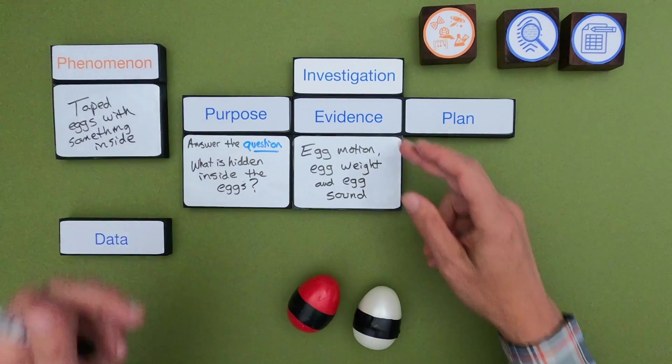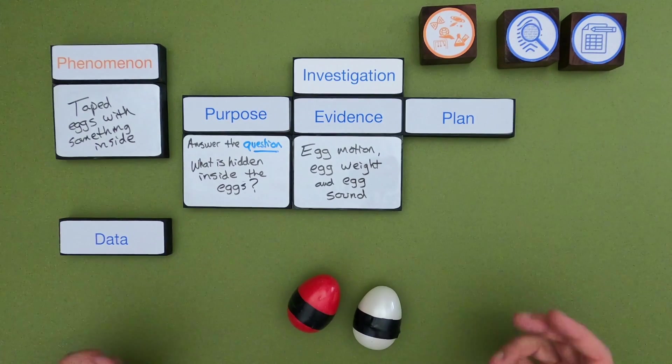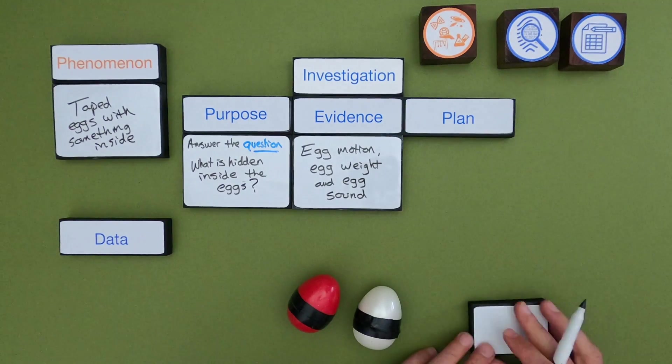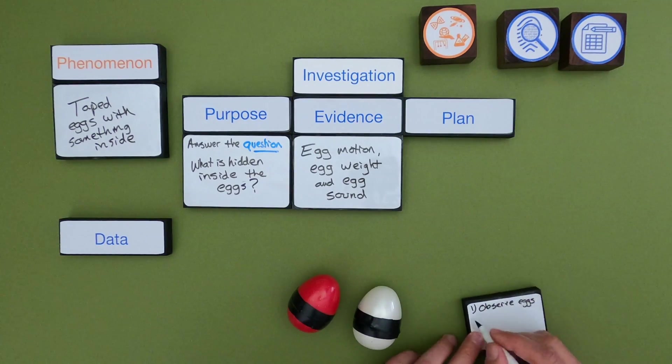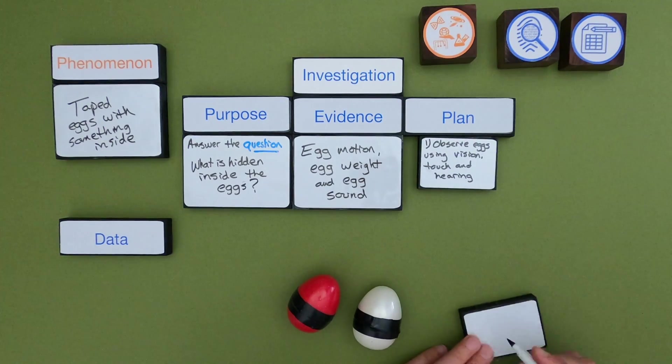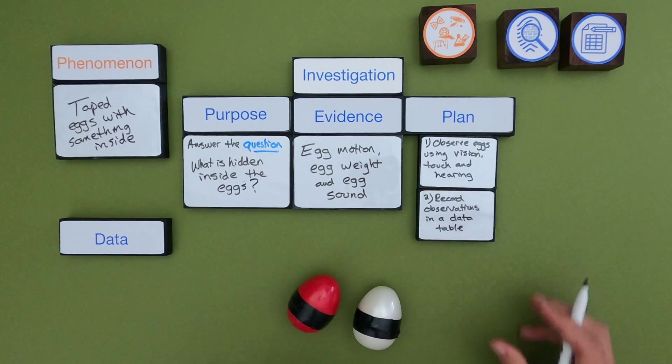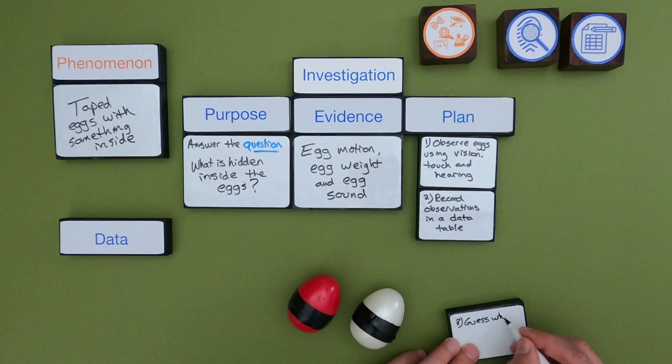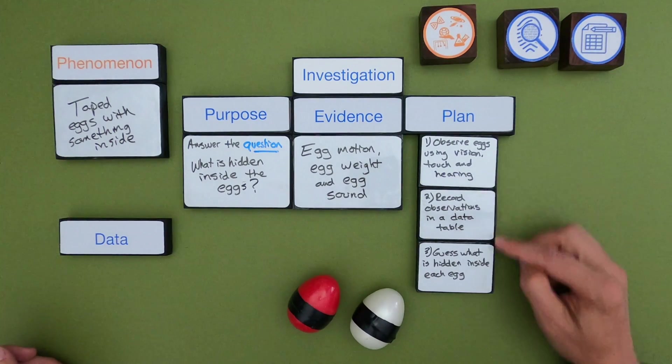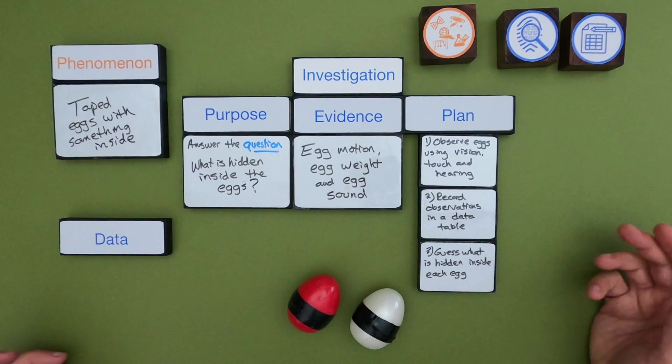So the next step once I got purpose and evidence is to come up with a plan. A plan is something that someone else could follow. So let me write down a specific plan. Okay so when you're writing a plan you want to put it in order and you want somebody to be able to follow it.